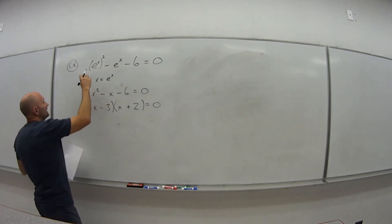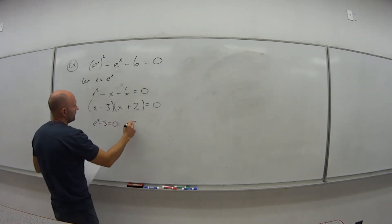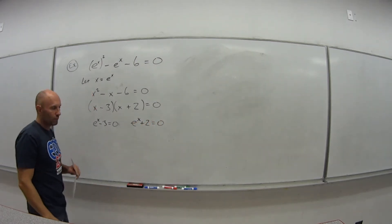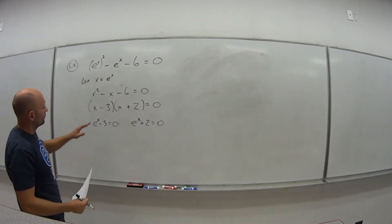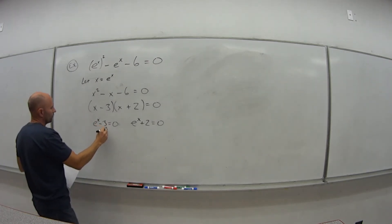So now I need to plug back in my substitution because I'm not trying to solve for x, I'm trying to get e to the x. So that means e to the x minus 3 by zero property rule is equal to 0, and e to the x plus 2 is equal to 0. So let's solve each of these separately. Well this, if I move 3 over, I get e to the x equals positive 3.